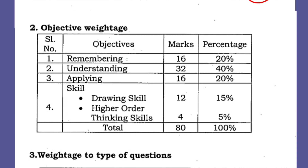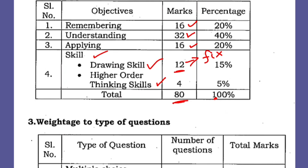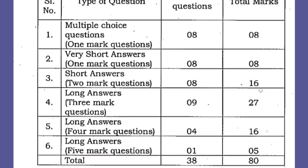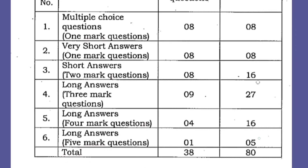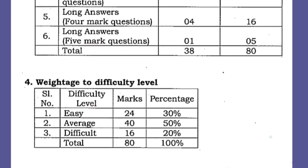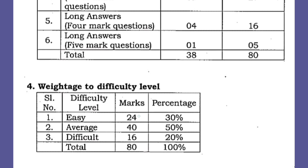In terms of cognitive levels: Remembering is 16 marks, Understanding is maximum 32 marks, Applying is 16 marks (application-based means numerical problems), and Skill-based means drawing skills — total 12 marks fixed for diagrams. Higher Order Thinking Skills (HOTS) is the most difficult, based on application and higher-order thinking. Regarding question types: 8 MCQs, 8 very short answers, 8 short answers (two marks), and 9 three-mark questions — total 80 marks. Difficulty level: 24 marks easy, 40 marks average (50%), and 60 marks difficult. I hope you understood — please like and share. Thank you!